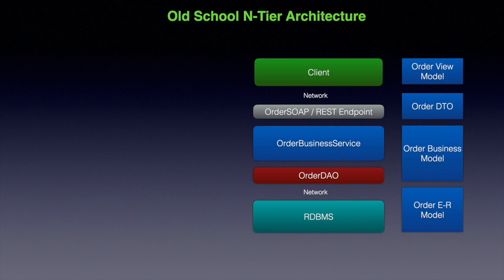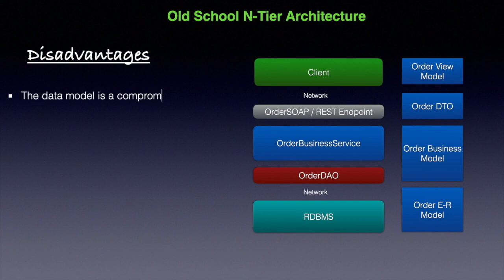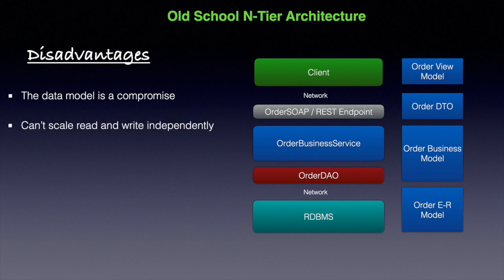Let's look at the problems with this architecture. The data model is a compromised one — we compromise on business logic processing, writing and reading the data. The reading component is completely dependent on database views or persistent views to improve application performance, meaning application performance depends on data storage. Also, we cannot scale read and write components independently, because we deploy these two components together as a single deployment unit.